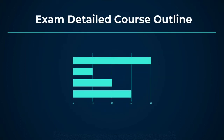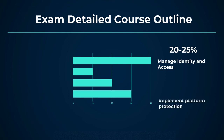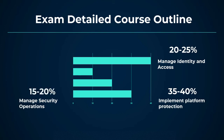The exam detailed course outline: first, manage identity and access, which comprises 20 to 25% weight in this exam; second, implement platform protection, which comprises 35 to 40% weight; third, manage security operations, which comprises 15 to 20% weight; and fourth, secure data and applications, which comprises 30 to 35% weight in this exam.